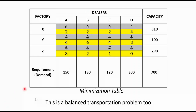This is also a balanced transportation problem. A balanced transportation problem means the total demand equals the total capacity. The total demand is 700 — that's 150 plus 130 plus 120 plus 300. The total capacity is also 700 — that's 310 plus 100 plus 290. So since it is balanced, we don't need to add a dummy demand, dummy factory, or dummy dealers.